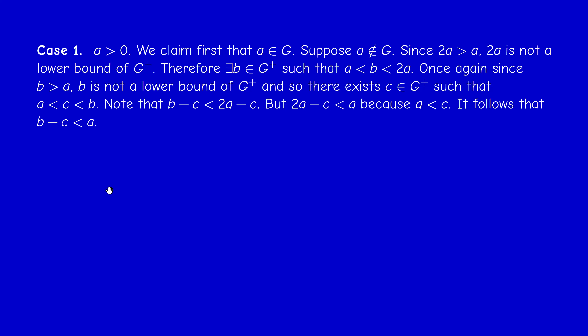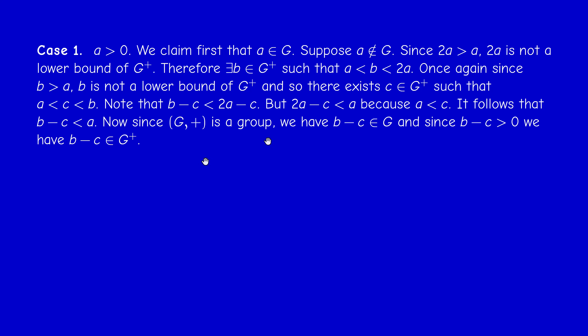We get a contradiction because B and C are elements of G. Since G is a group, the difference B - C is still inside the group, so B - C is an element of G. Because B > C, the difference is positive, so B - C belongs to G+. On one hand, since it's an element of G+, it should be greater than or equal to the infimum a, so B - C ≥ a. But by construction, B - C < a. This is a contradiction.